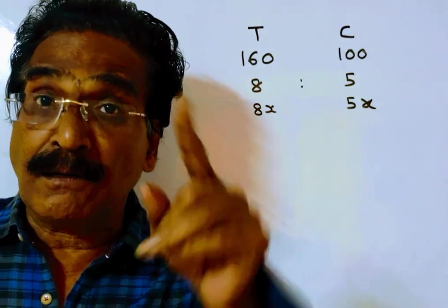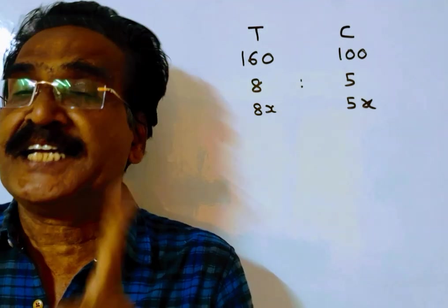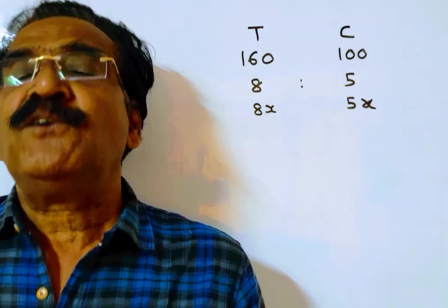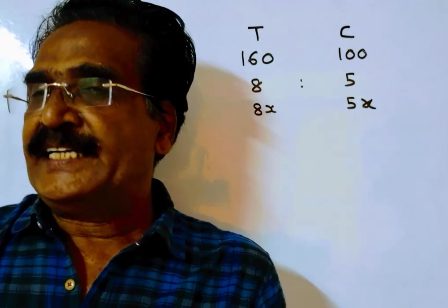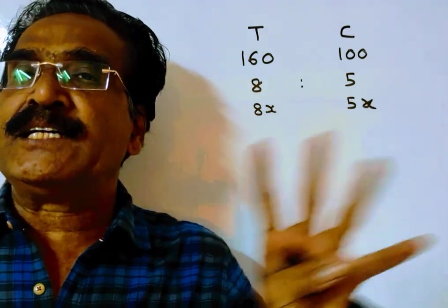If the train had not stopped for that 20 minutes, it would have reached station B 20 minutes earlier than the car. So the difference between the times, the difference between the times of the train and car, is 20 minutes.